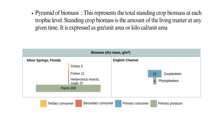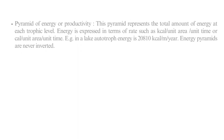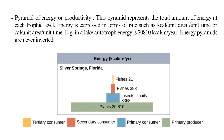Standing crop biomass is the amount of living matter at any given time, expressed as grams per unit area or kilocalories per unit area. Pyramid of energy or productivity represents the total amount of energy at each trophic level; energy is expressed in terms of rate such as kilocalories per unit area per unit time. Energy pyramids are never inverted.